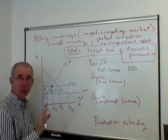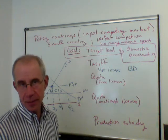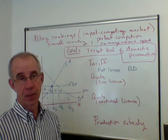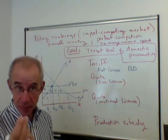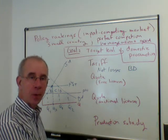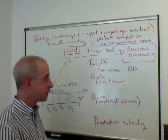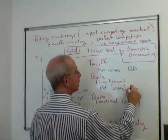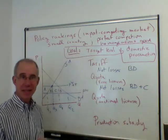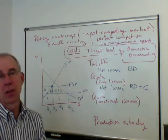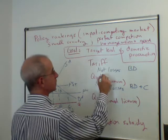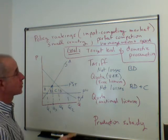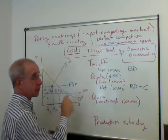If licenses are free — that is, foreigners who want access to this protected domestic market are allowed in with no payment to the government — they get to keep the extra profits associated with operating in this market. The net losses in that case, with free licenses, are B plus C. C is a transfer from domestic consumers to the foreign producers. This is essentially what happens with a voluntary export restraint. From an overall national welfare standpoint, a tariff is better than a quota with a free license.